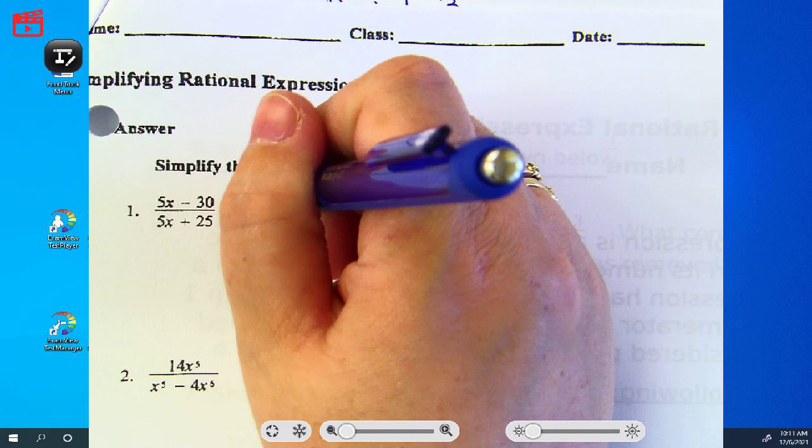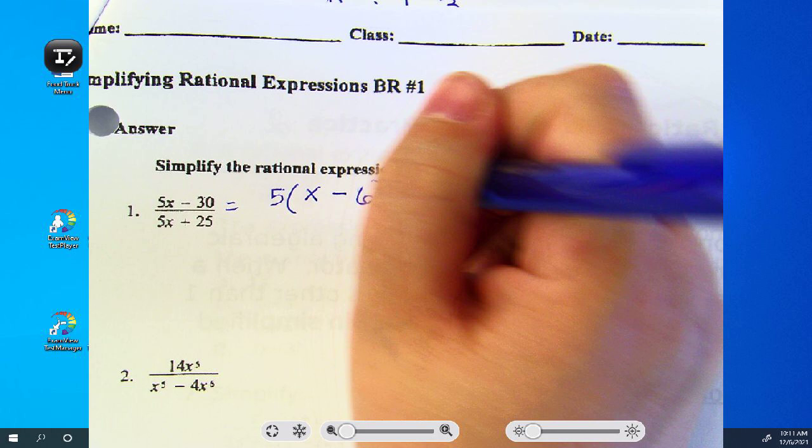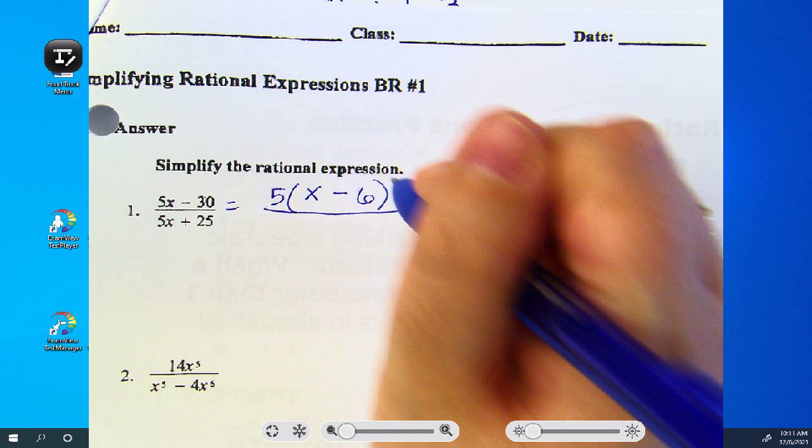5. When you divide everything on top by 5, 5x divided by 5 is x, 30 divided by 5 is 6.